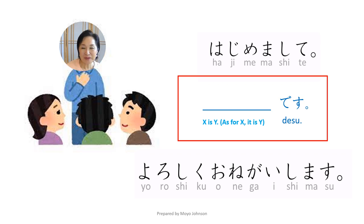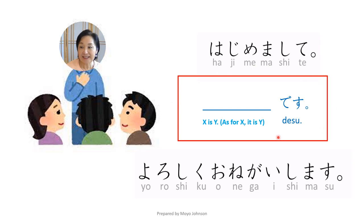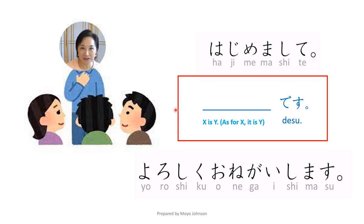Do you remember this phrase for self-introductions? I introduce myself as: はじめまして。 Johnson desu. よろしくお願いします。 This second sentence is an example of the topic-omitted form. I did not say watashi wa Johnson desu, because everyone understands I am talking about myself when I introduce myself.